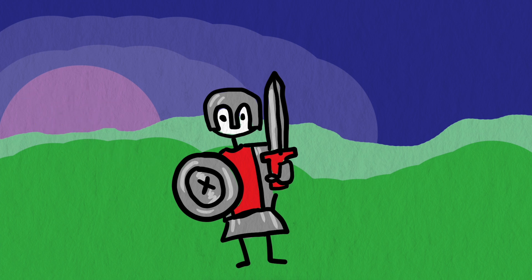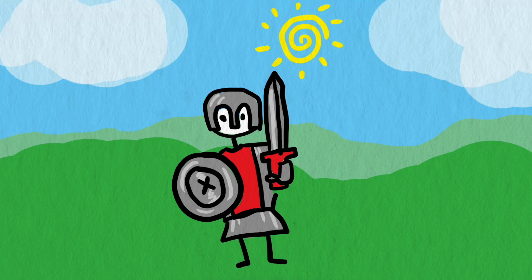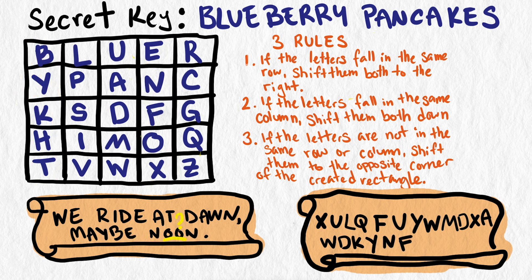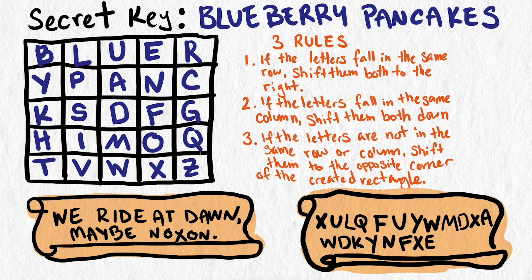There is a problem to address, however. What if the message contained a repeated letter pair, like "noon"? The letters M, A, Y, B, E, N would all encrypt just fine, but where do you send O, O? The solution was to place a non-problematic letter, such as X, between the repeated letters, so the message reads: maybe N, O, X, O, N — and we continue encrypting O, X and O, N.